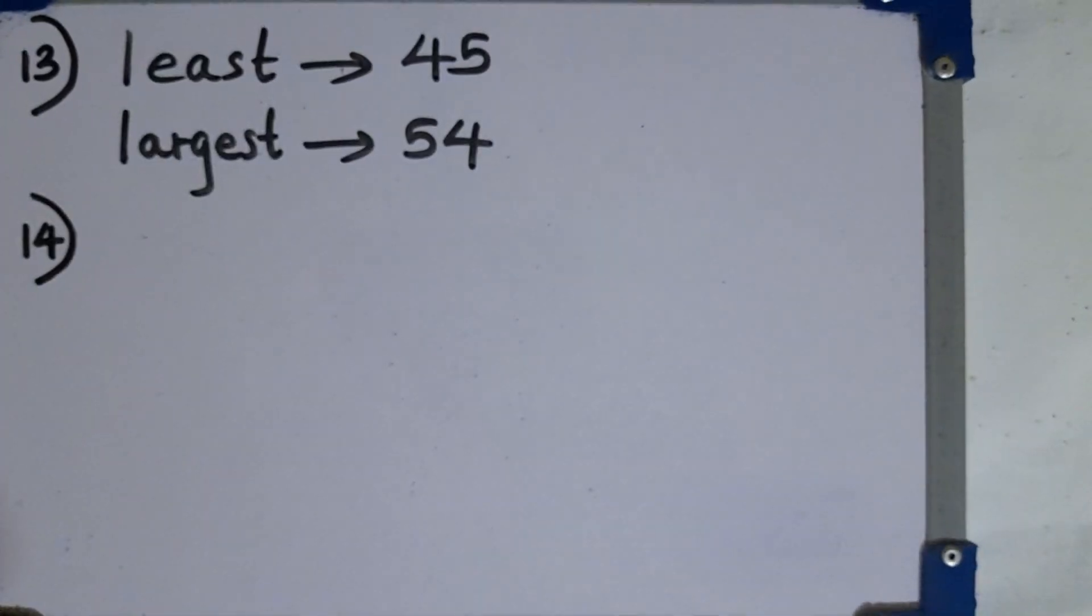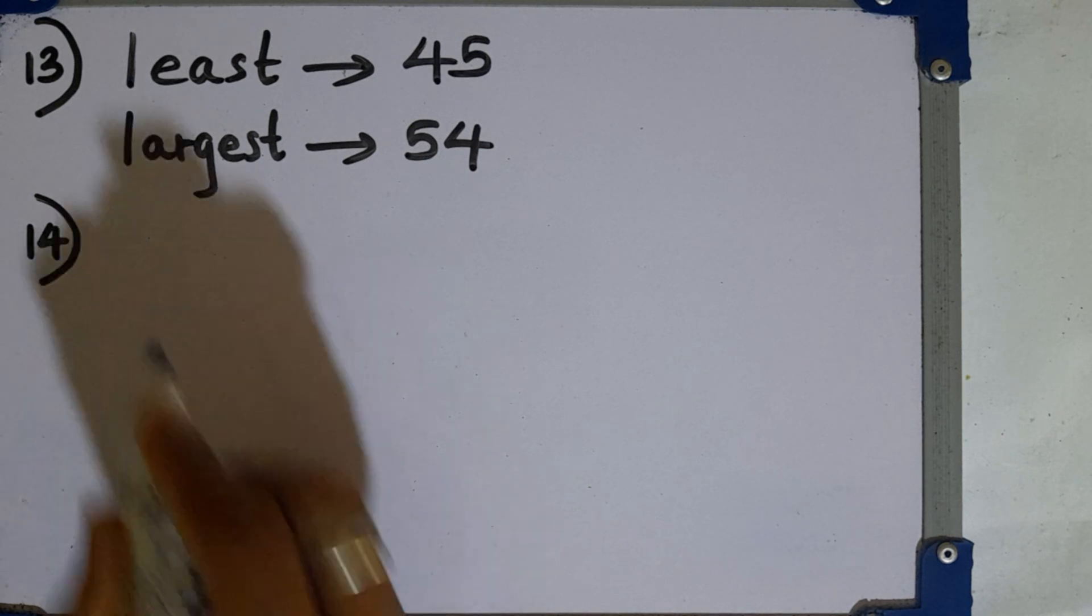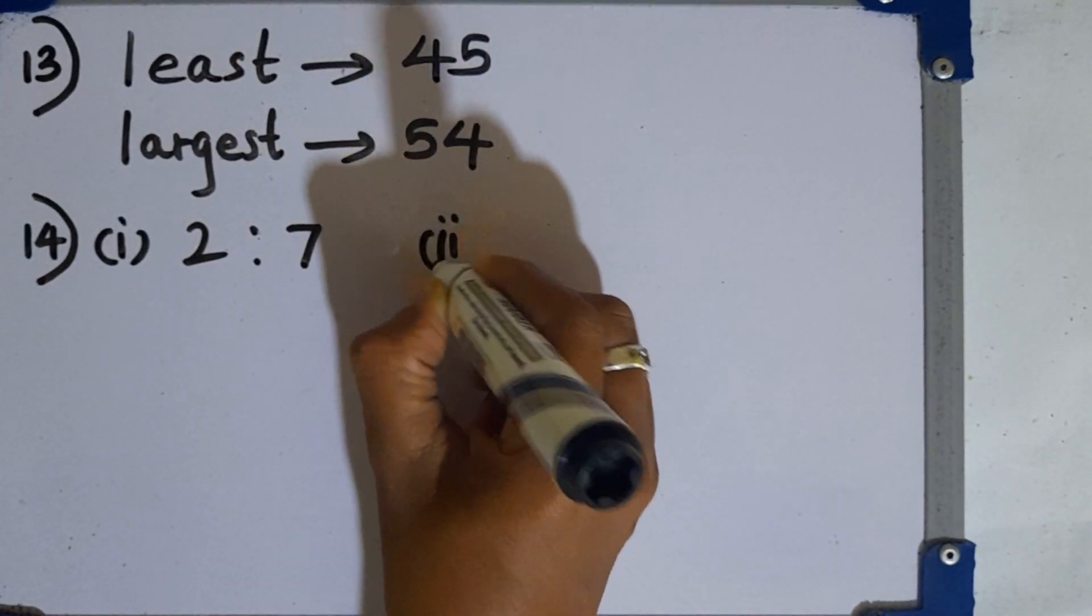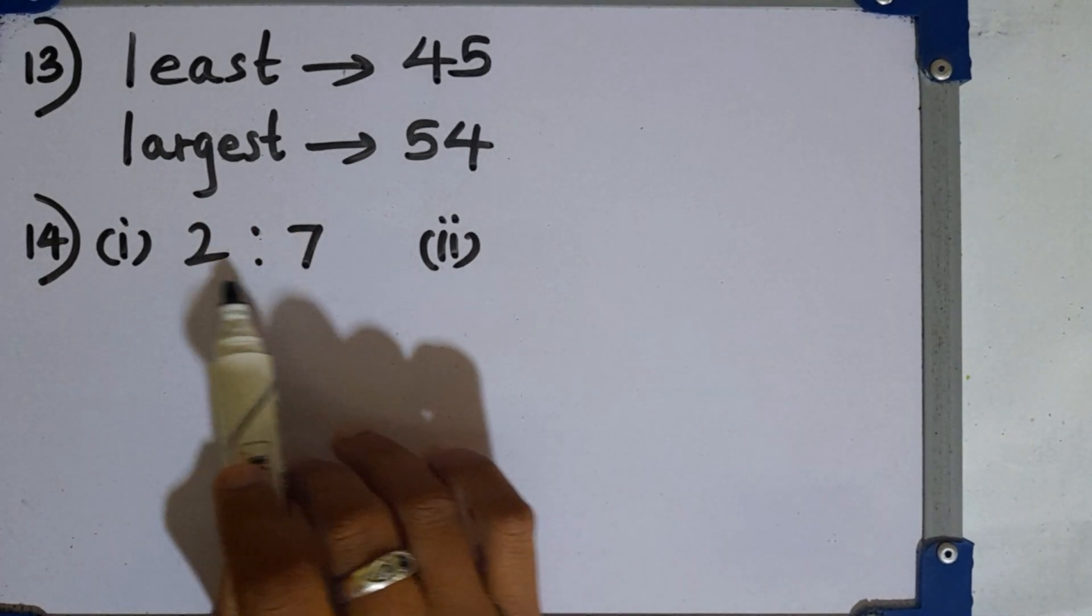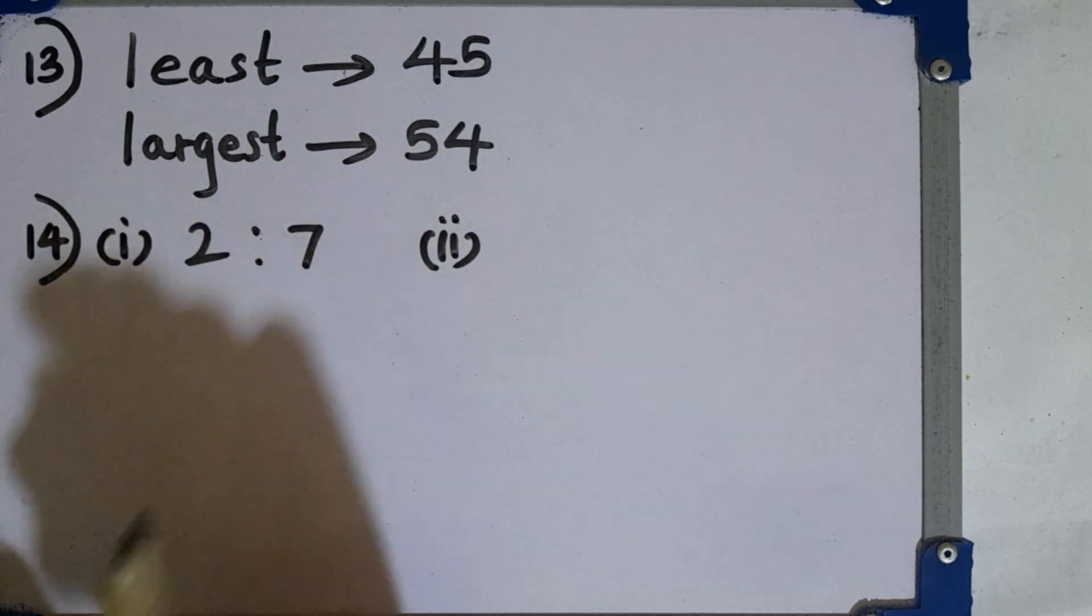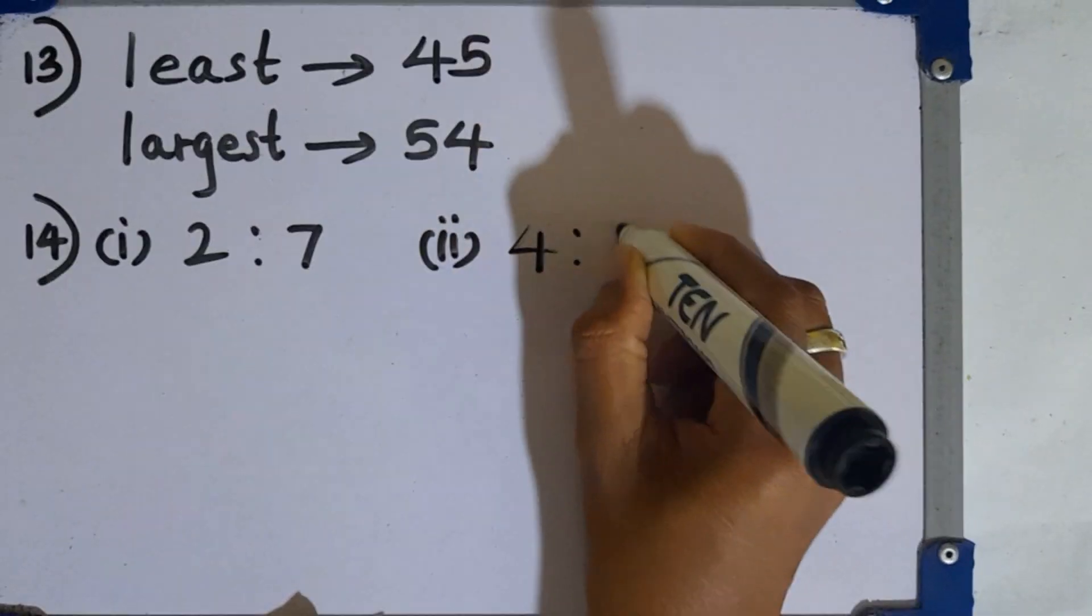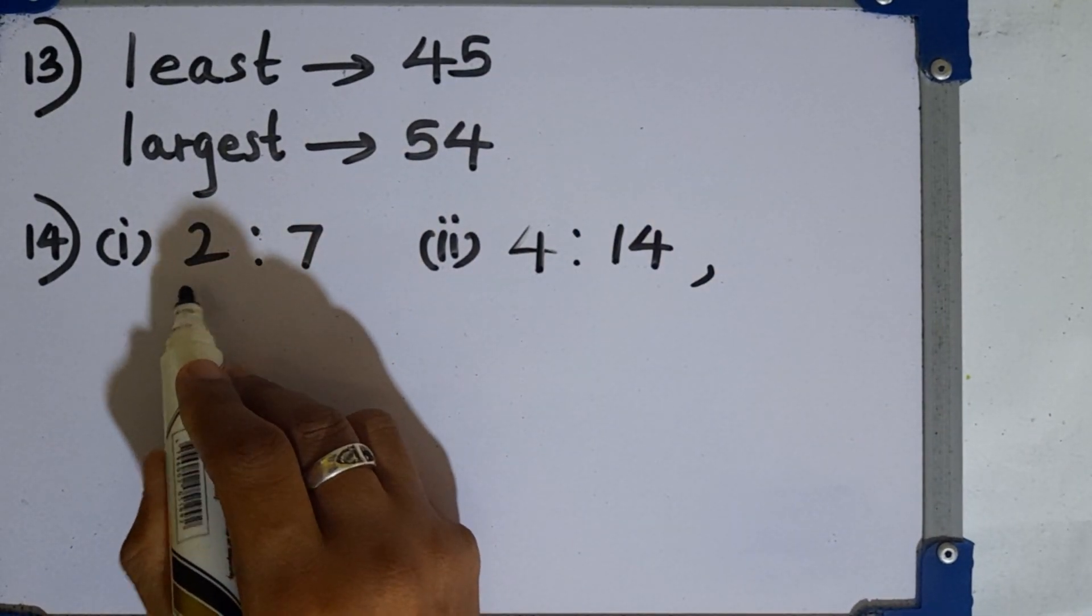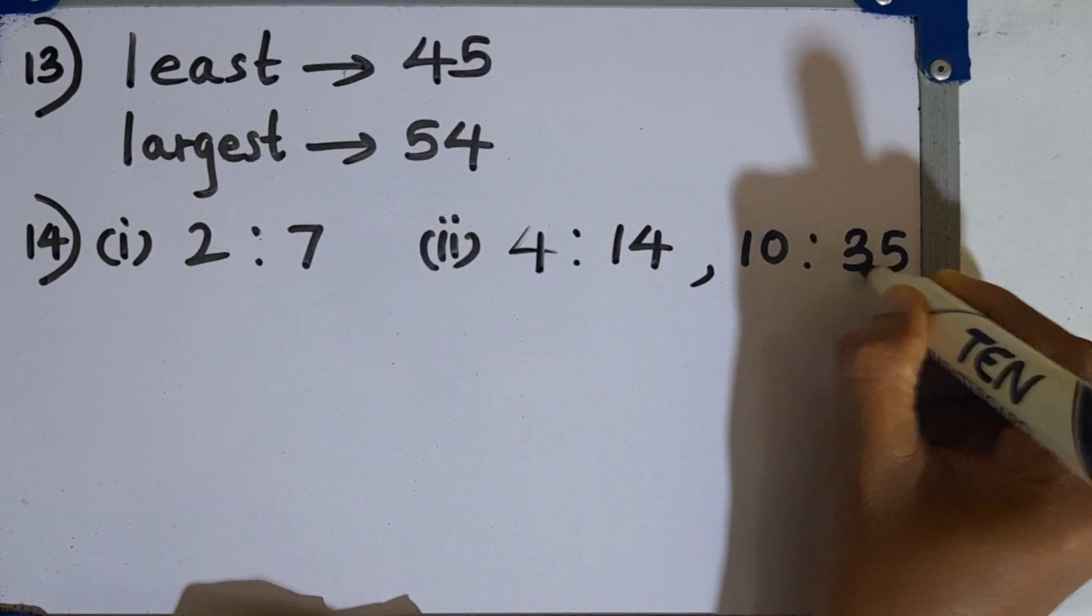Question number 14. Write the ratio 2 to 7 in symbolic form. 2 to 7 can be written like this. Then second part write an equivalent ratio to the above ratio. You can multiply these both terms by any number. I will multiply by 4 then you get 4 to 14. Then again you can multiply by 5. 5 times 2 is 10 then 5 times 7 is 35.